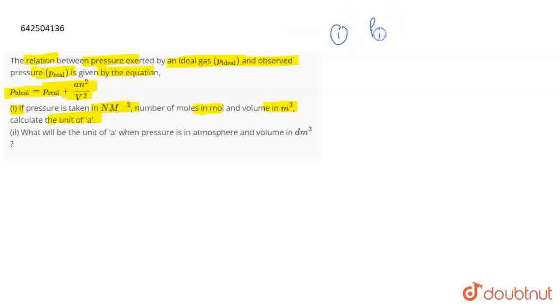Now the first thing to write is the equation that you are given. You are given P ideal equals P real plus A n squared by V squared.